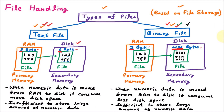The difference between text file and binary file: in the text file, when moving numeric data from RAM to disk it consumes more disk space — three bytes in RAM becomes six bytes on disk. In the binary file, numeric data moved from RAM to disk consumes less space because it is stored as 0s and 1s. Because the text file consumes more disk space it is inefficient for storing large amounts of numeric data, but the binary file takes less disk space and is sufficient for large numeric data.